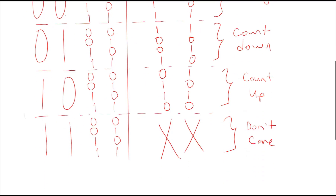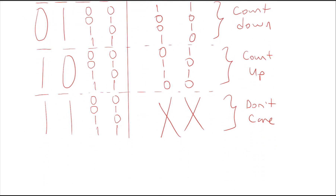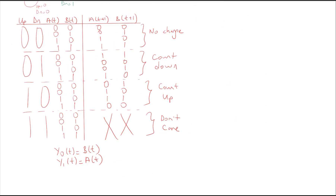For the output logic, since this is a Moore counter, my output will be equal to my current state. Let's say my output is Y. Y0T equals BT and Y1T equals AT. So I have a 2-bit output Y0 and Y1, and they are equal to my present state. Given this state table, now we can find our next state equations.